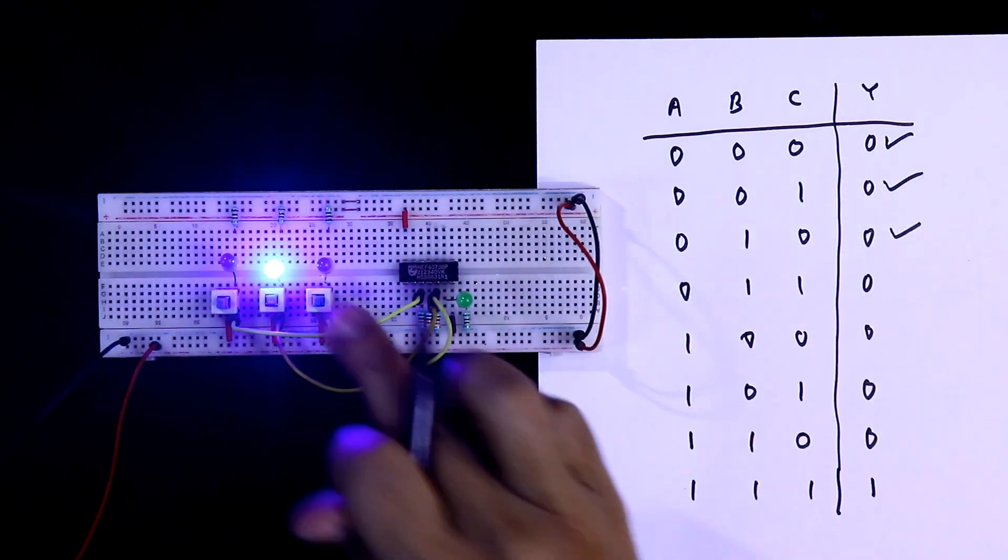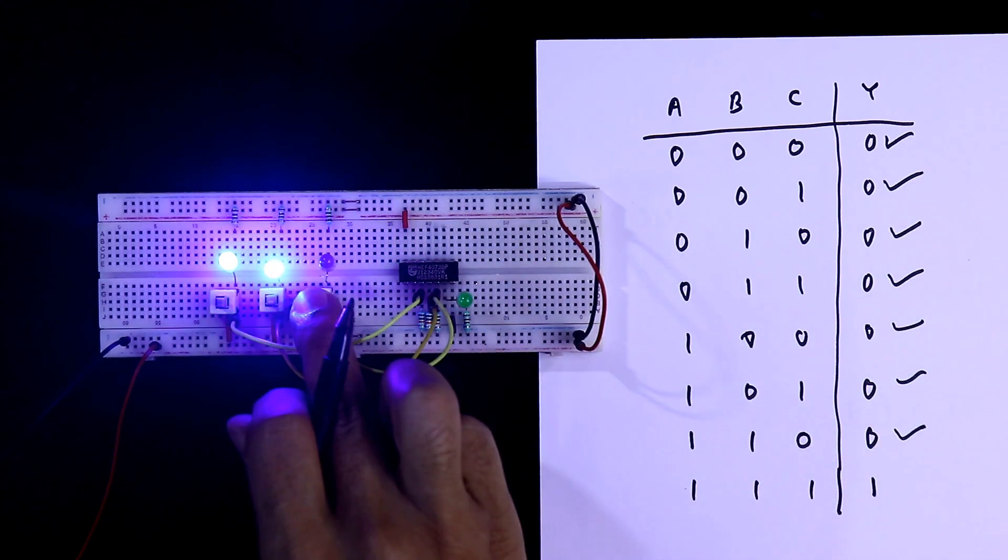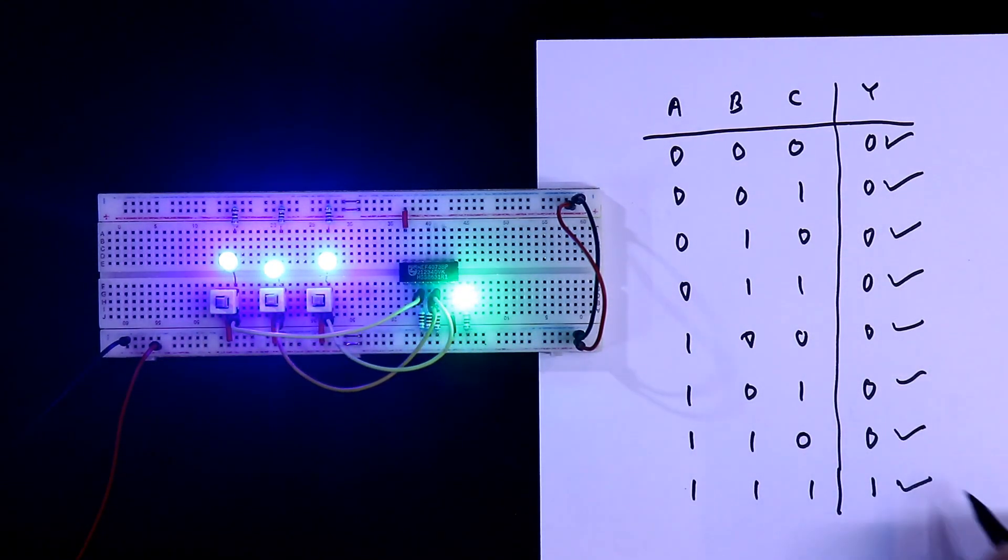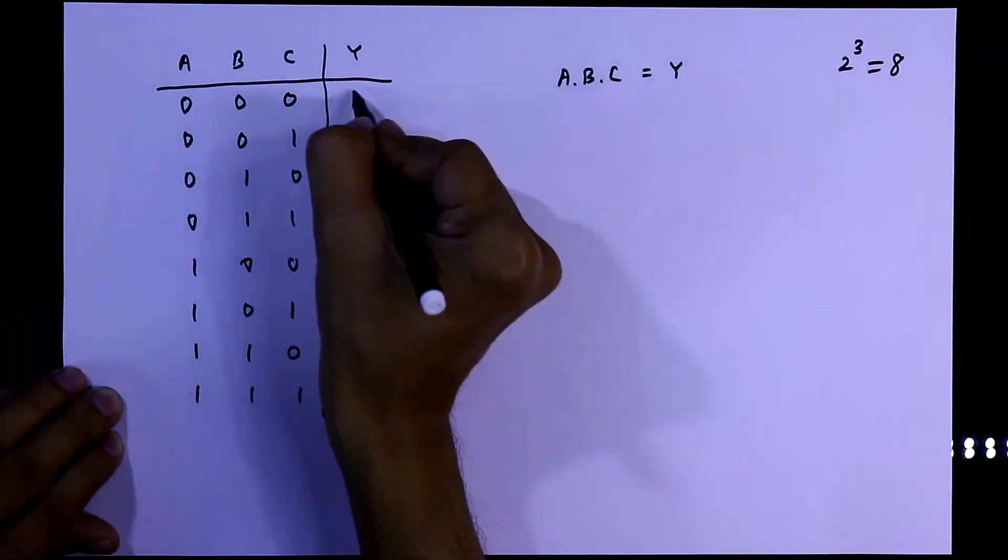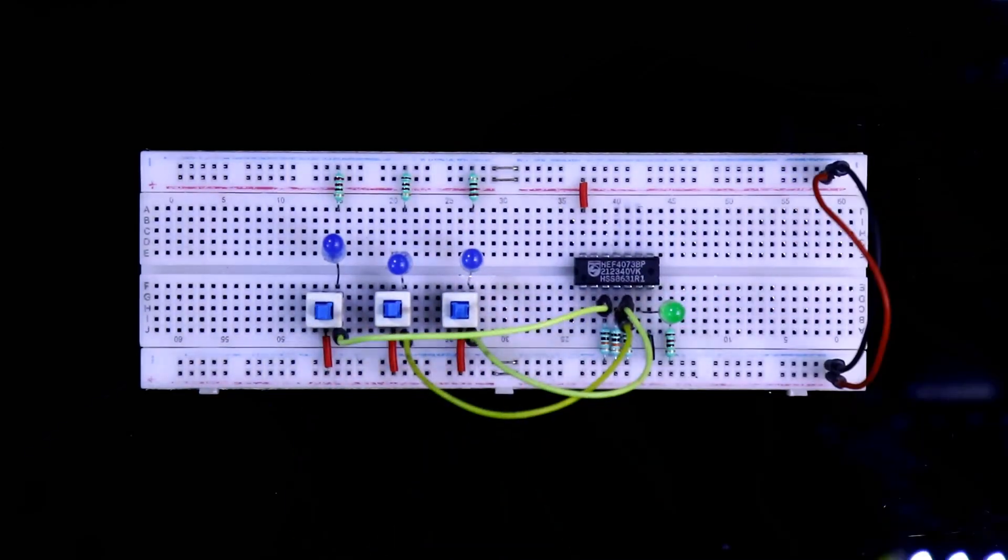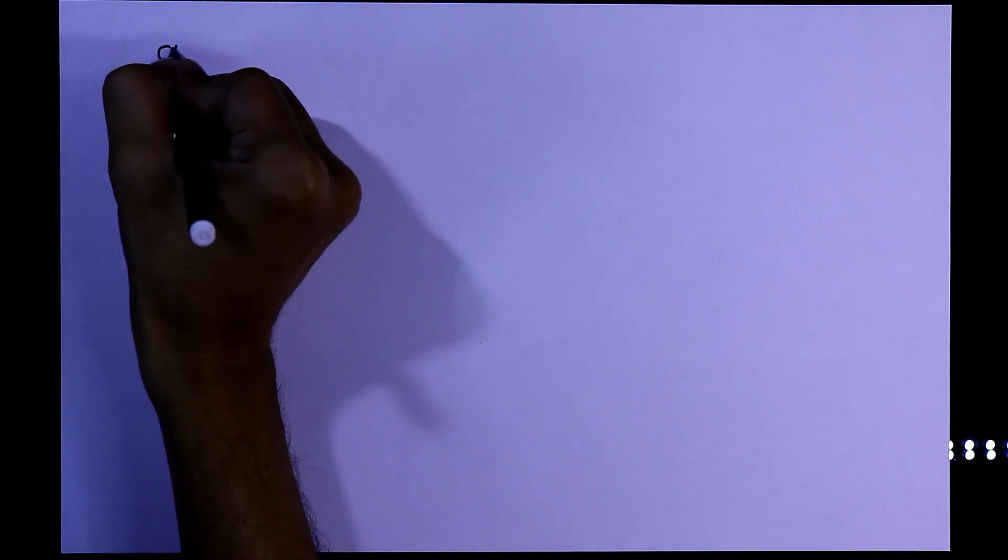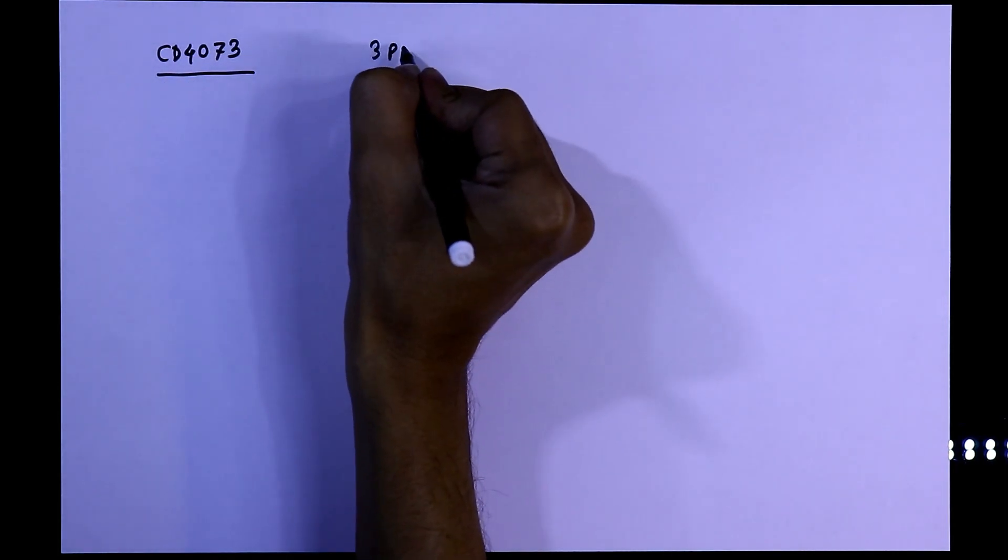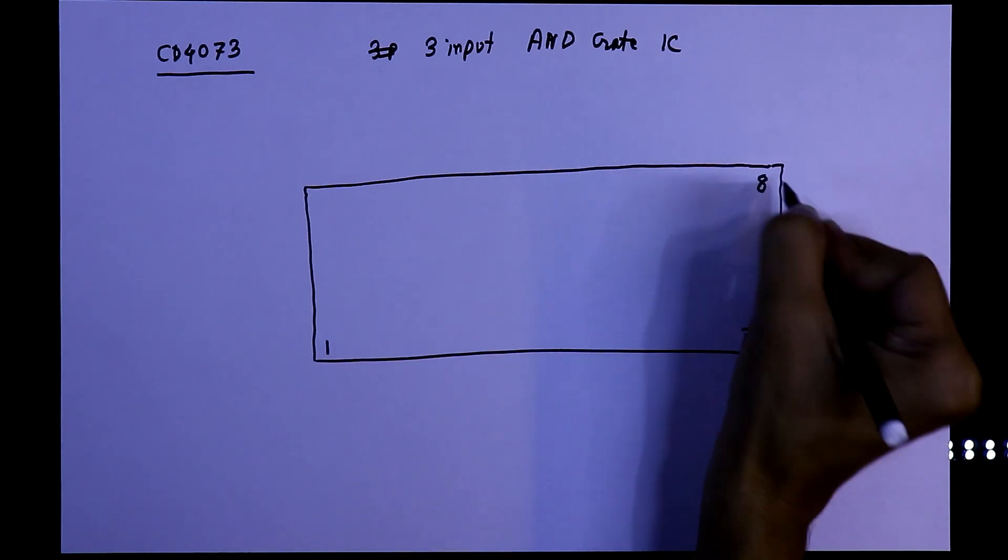In this video, we are going to see how to use the 3-input AND gate IC 4073. Let's get started. The 4073 is a 3-input AND gate IC. Let's have a look at the pin diagram.